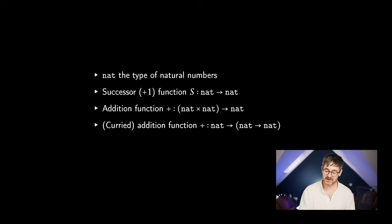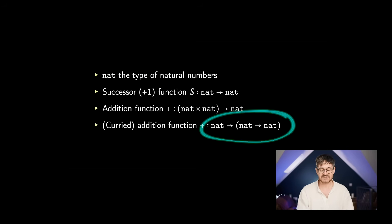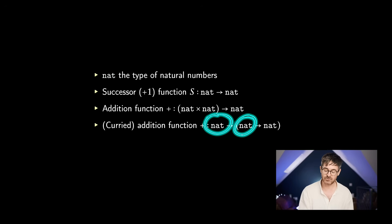Often when we do type theory, we're going to consider functions like this. So this is sometimes called the curried form of that function. It always takes in one input, but it gives us back another function, which maybe takes in one input and gives us back another function until we get the output. It's a function from natural numbers to natural numbers to natural numbers. And it basically means the same as from a pair of natural numbers to a natural number.